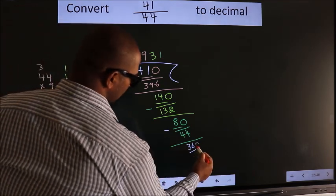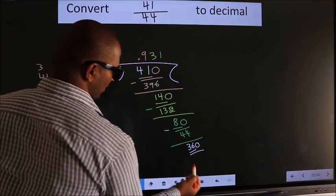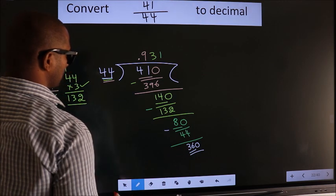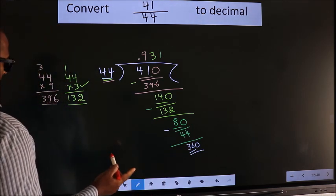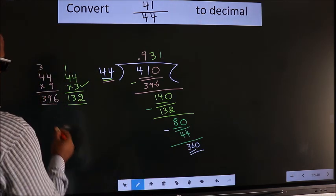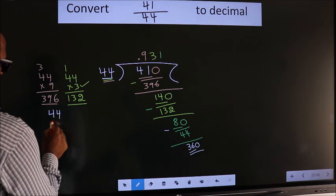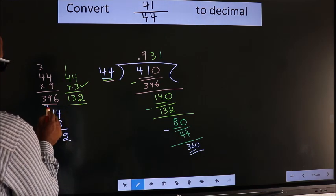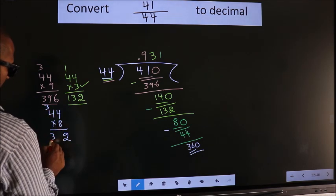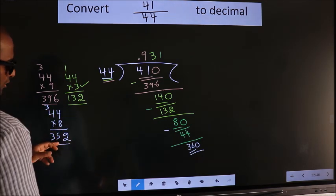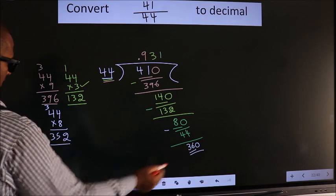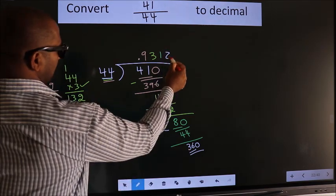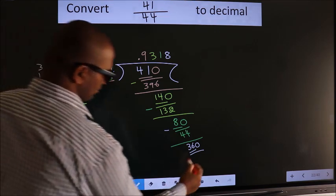We have 36 here, and 44 here. 36 is smaller than 44. We already have the decimal, so directly take 0, making 360. A number close to 360 in the 44 table is 8 times. 44 × 8 = 352 (8×4=32, carry 3, 8×4=32+3=35), so 352 is close to 360. We go with 8, so 8 times gives 352.